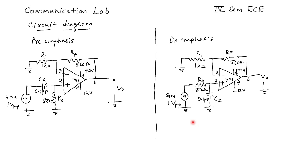This is the circuit of pre-emphasis and de-emphasis. Here we have op-amp 741 and the feedback resistors are as shown. We are going to set a sine signal of 1 volt peak-to-peak and vary the frequency from 100 Hz to 5 kilohertz. In pre-emphasis we have a capacitor and resistor network as a high-pass filter, and in de-emphasis we have a low-pass filter.